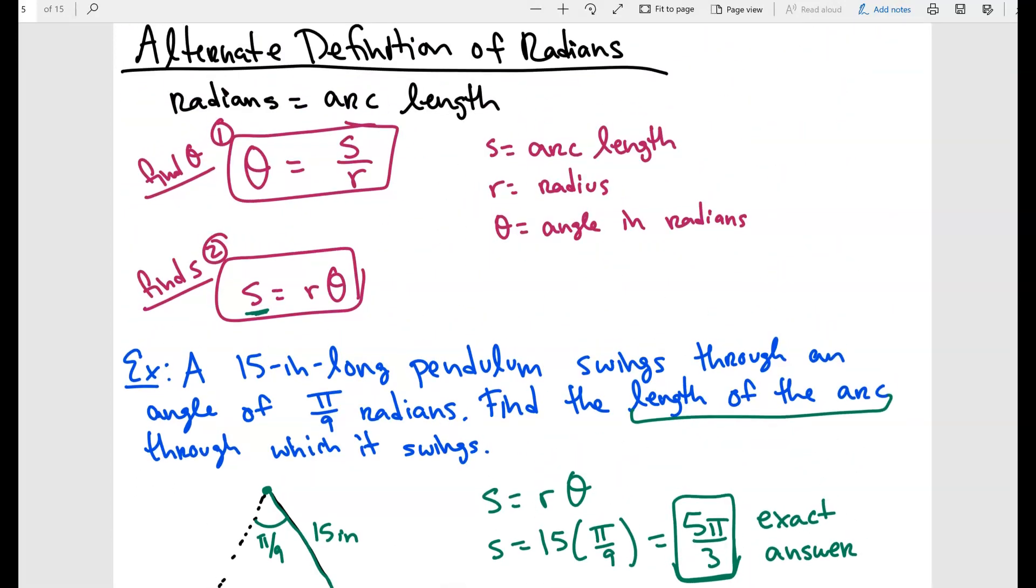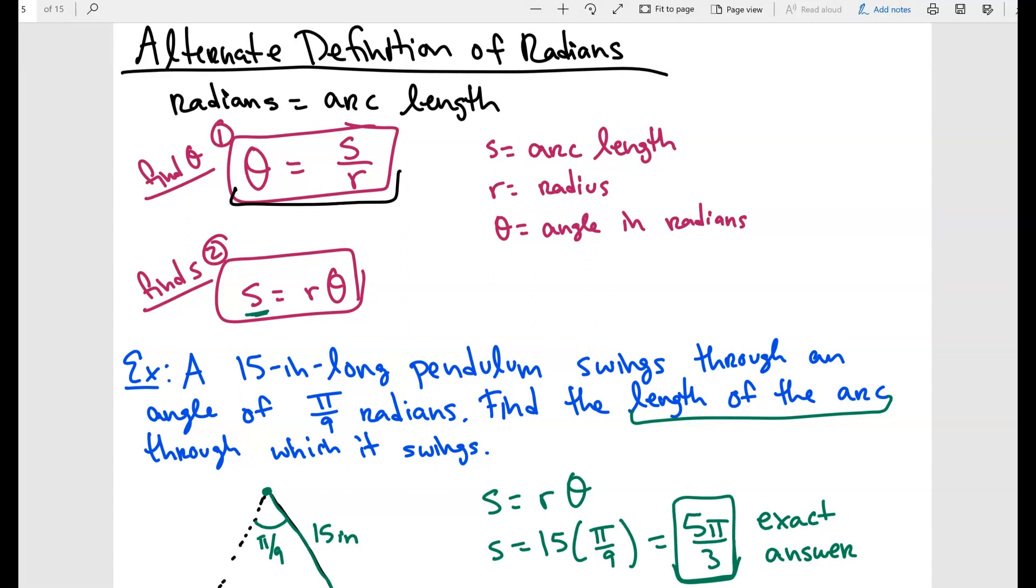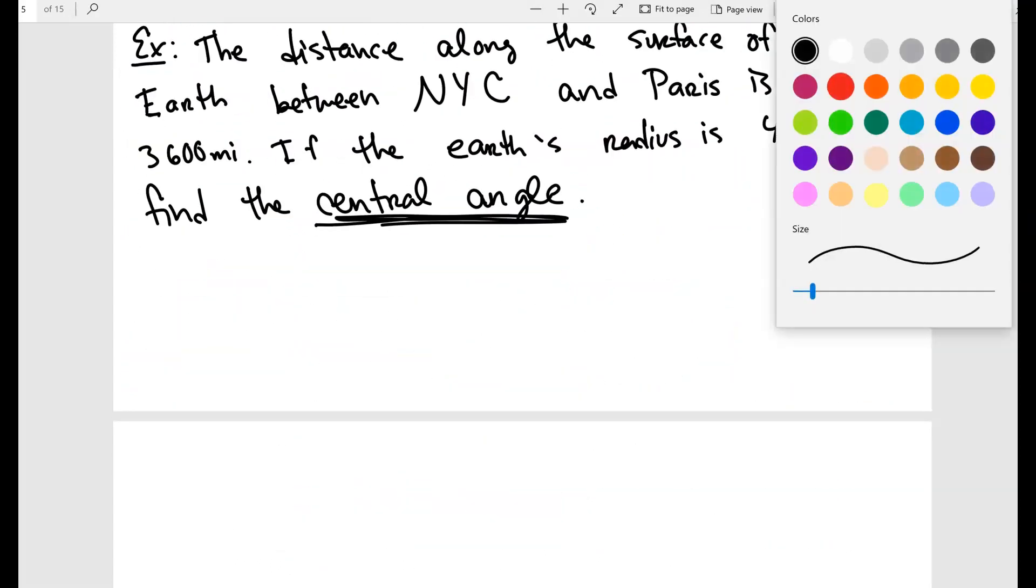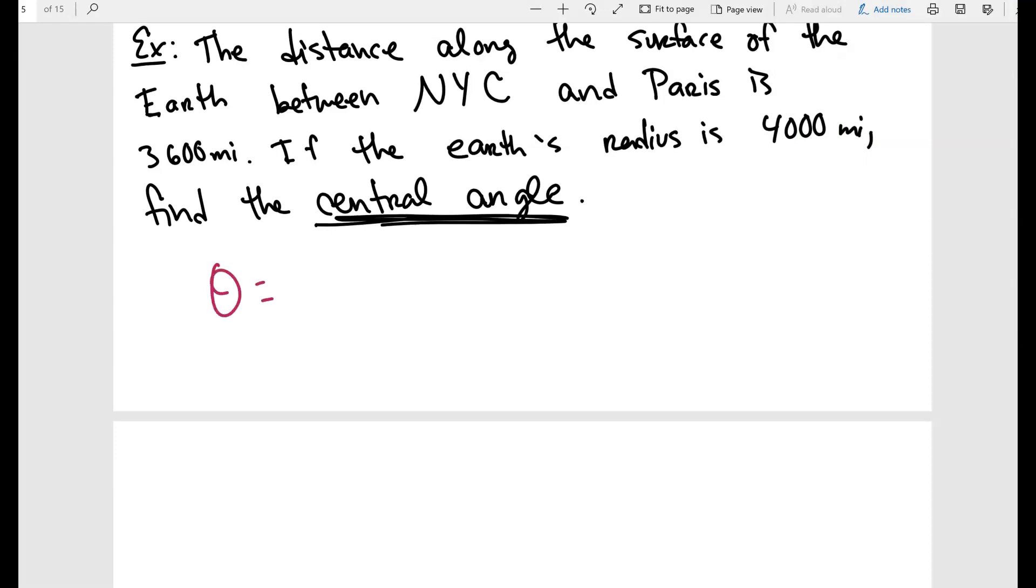So if we go back up, theta is going to be S over R. So theta equals S over R. The S is going to be the length. In this case, the length is basically the distance between these two places, which is going to be 3,600 divided by the radius, which is going to be the earth's radius is 4,000. And when I put this in my calculator, I'm going to get 0.9, and this is in radians.